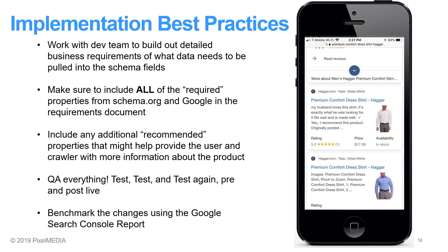QA everything. Test before, test again, and test after. While your developer is implementing these changes to the template, we recommend using the Google Structured Data Testing Tool to test the changes that they have made. Make sure all the required properties are met before pushing live. Once you do push live, make sure to test again using the same tool. You can also do a live test by just Google searching one of your product names and seeing the rich results in real time, like the example to the right. Once all the changes are made, make sure to benchmark the changes against the original report that you ran in Google Search Console. Here you can see the trends and the errors and the warnings hopefully going down, and you can identify any additional errors that may need to be adjusted.